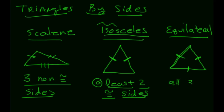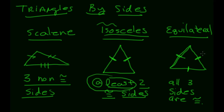An equilateral triangle — 'equi' meaning equal, 'lateral' meaning side — has all three sides congruent. Note that equilateral triangles are actually a subset of isosceles, because they have at least two congruent sides. All equilateral triangles are isosceles, but not all isosceles triangles are equilateral.